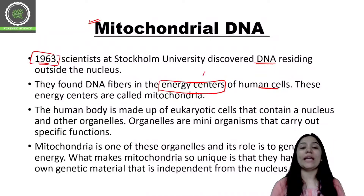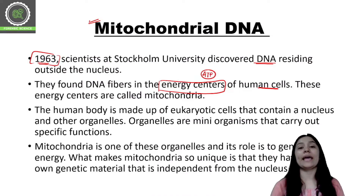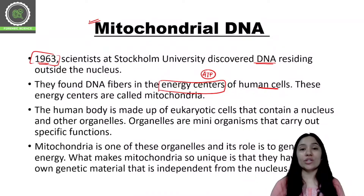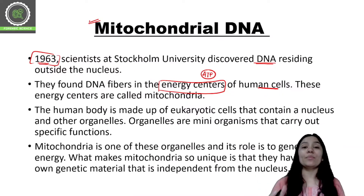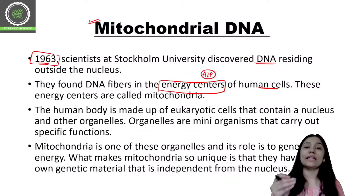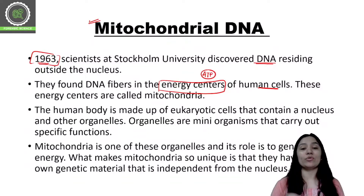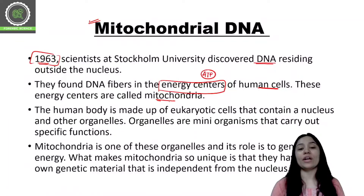Our body creates and consumes energy in the form of ATP. The generation of ATP is in the mitochondria. We have seen that in addition to nuclear DNA, there is DNA present in the mitochondria. These energy centers are called mitochondria.